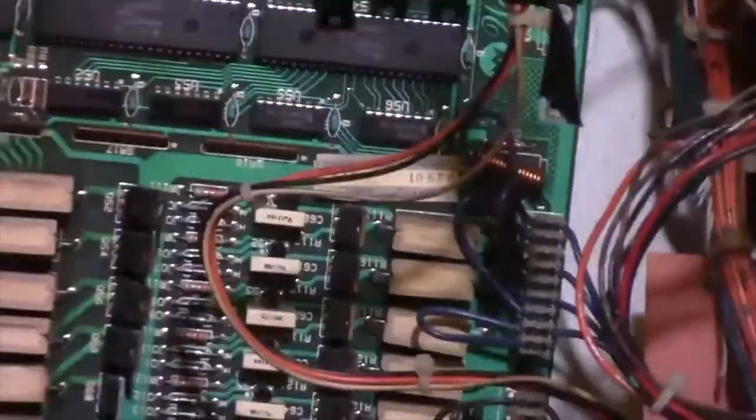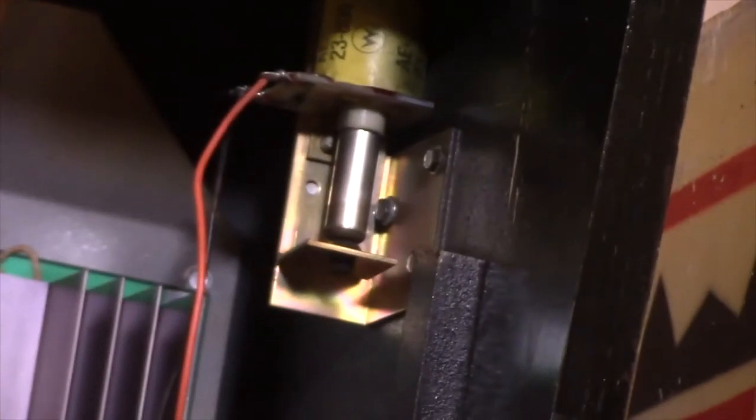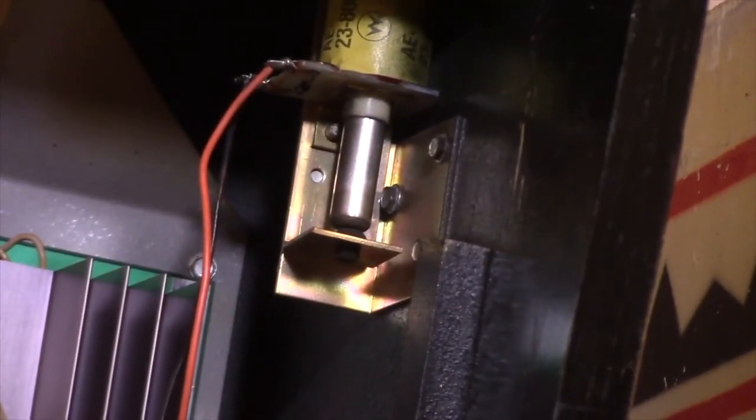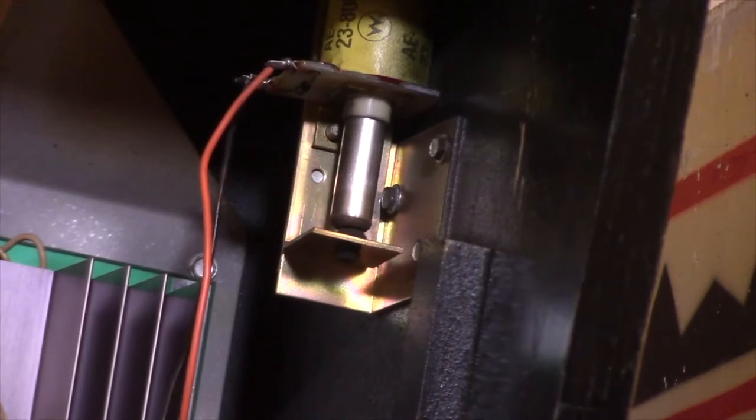And on this machine, a little more, there we go. The free game, if you get to the free game score, there's always a kicker in there someplace. And that's the solenoid that knocks up against the top of the cabinet there. It goes THUNK! So you know that you got a free game.